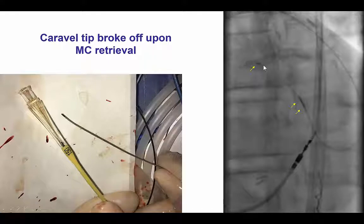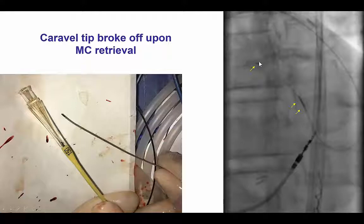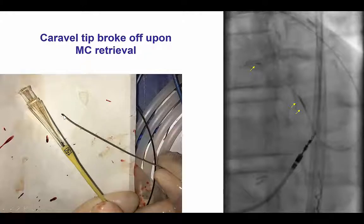We eventually tried to remove the Caravel to replace it with another microcatheter. In the process, the Caravel microcatheter tip broke and remained entangled into the left main stent, while the back end of the Caravel came out.